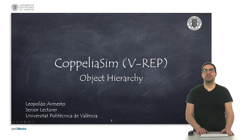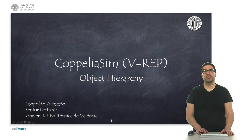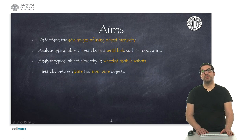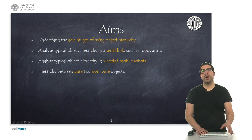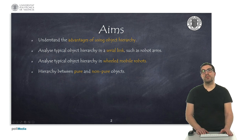Hello. In this video I will explain the hierarchy between objects necessary to create different robotic systems. Specifically, I will show the classic hierarchy of an articulated robotic arm and of a wheeled mobile robot. The aims of the presentation are to understand the advantages of using object hierarchy, to understand the hierarchies typically used for both an articulated robotic arm and a wheeled mobile robot, and I will also mention the recommended method to establish the hierarchy between pure and non-pure objects.